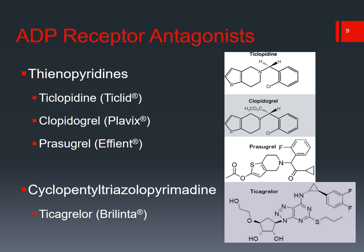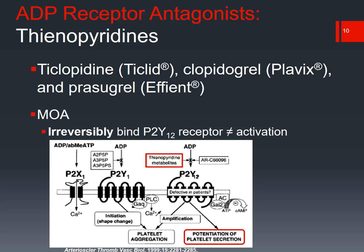There are three drugs in the thienopyridine class of ADP receptor antagonists. The first three approved are Ticlopidine (Ticlid), Clopidogrel (Plavix), and Prasugrel (Effient). These are all irreversible and bind at the P2Y12 receptor, thereby blocking activation. Most recently, we have Ticagrelor (Brilinta), which is a newer subfamily. You should be familiar with both brand and generic names in preparation for NAPLEX.